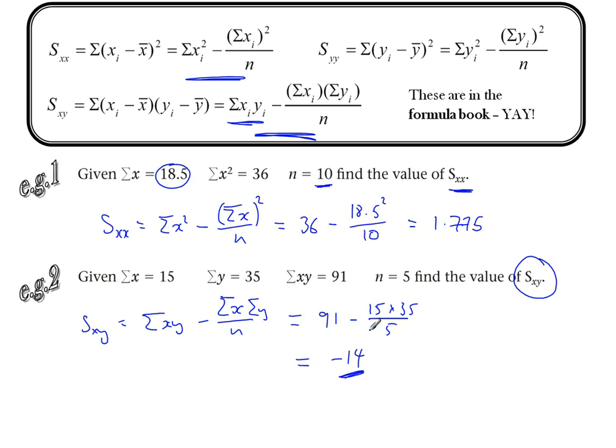Now that number itself, we can't interpret any meaning into the 14, but the minus, that tells me that, well, later on we'll see that that would imply that there's going to be a negative correlation between X and Y.